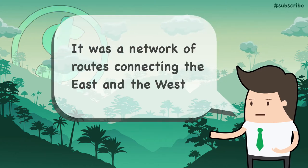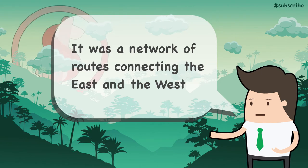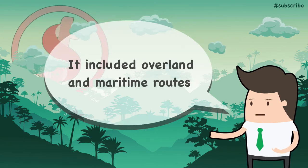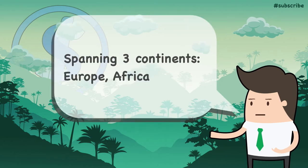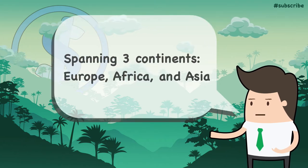The Silk Road was a network of trade routes connecting the East and the West in ancient and medieval times. The term is used for both overland routes and those that are marine or limnic. The Silk Road involved three continents: Europe, Africa, and Asia.